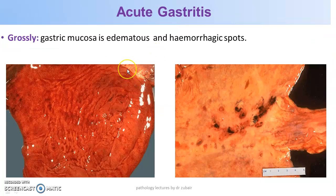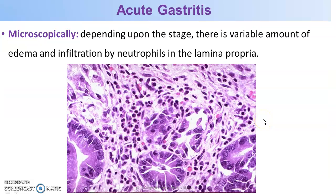On gross examination, the stomach appears edematous with hemorrhagic spots which are evident here. On microscopy, the lamina propria is rich with inflammatory cell infiltrate, predominantly neutrophils in between the glands.